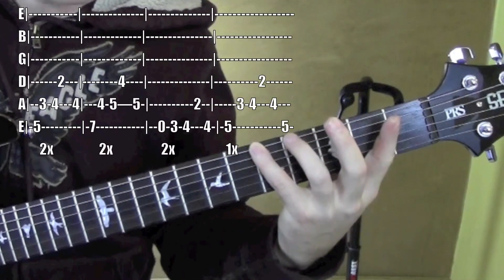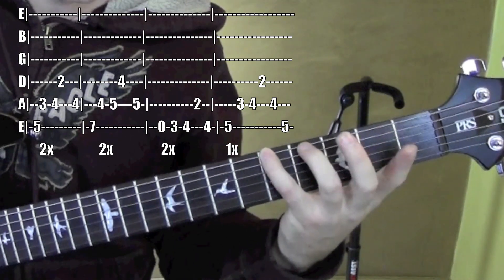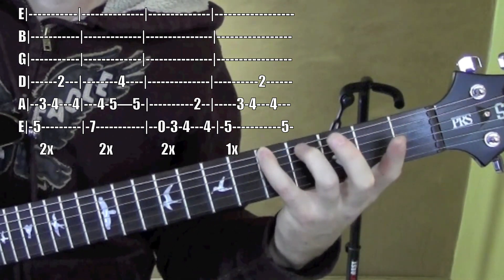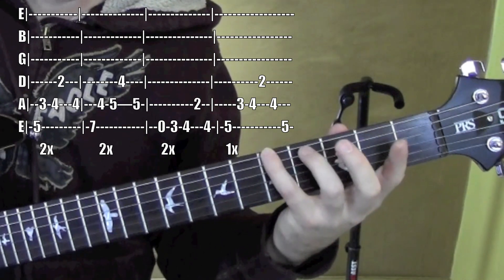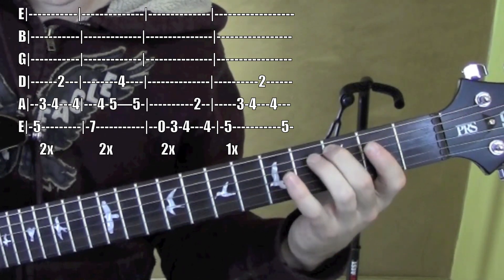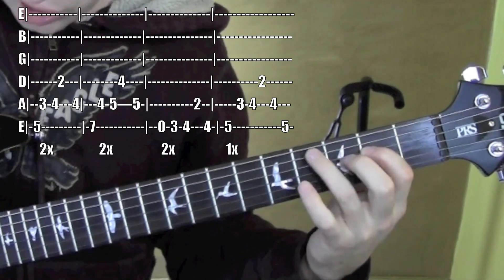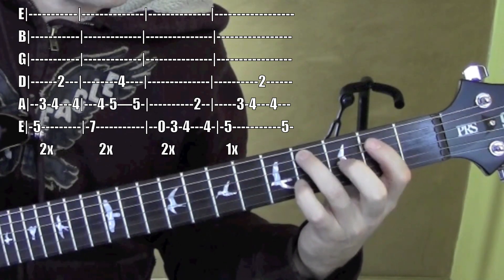So here we are, starting from the 5th fret on the 6th string, and I like to use my pinky because it just kind of lines up all the rest of the fingers to do the rest of the lick. So I'm starting from 5, then I'm on to the 5th string, 3rd fret, 3, 4, then to 2 on the 4th string, back to 4 on the 5th.